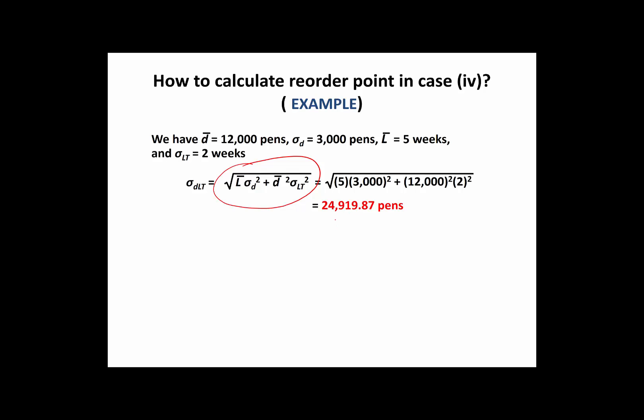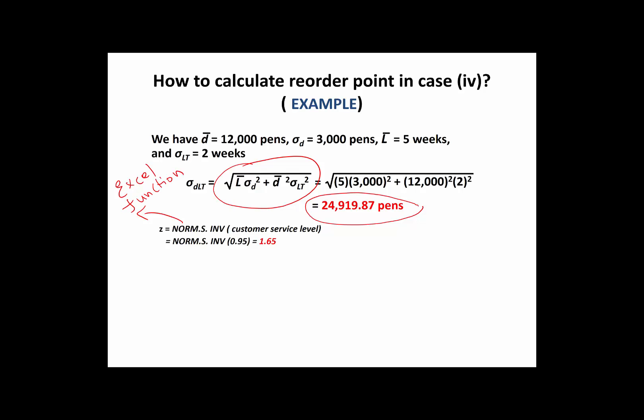The standard deviation Sigma-DLT in this case is approximately 25,000 pence. Now we need to find the Z value to calculate the safety stock. Z is calculated based on the customer service level using the Excel function NORM.S.INV, which returns the inverse of the standard normal cumulative distribution. With a customer service level of 95%, keying in 0.95 gives a Z value of 1.65. Using 1.65 and Sigma-DLT, the safety stock is calculated to be approximately 41,000 pence.